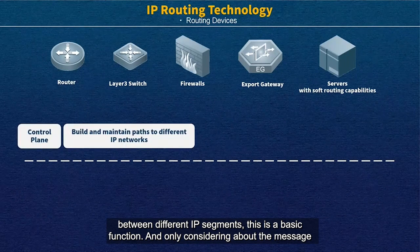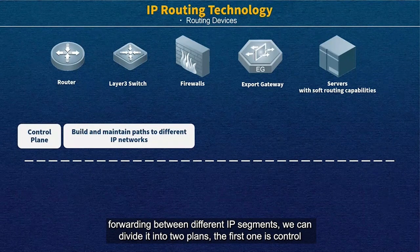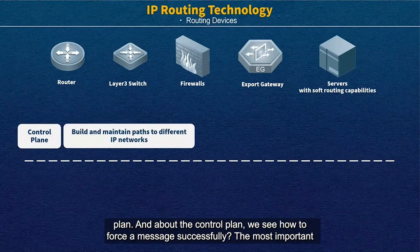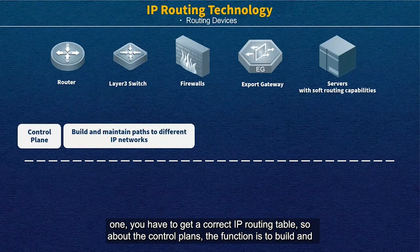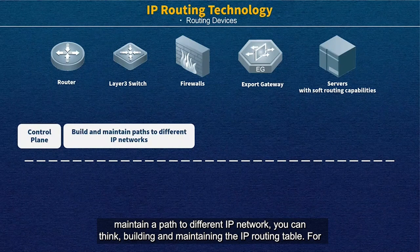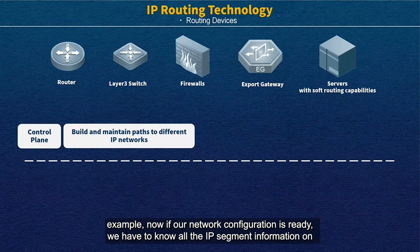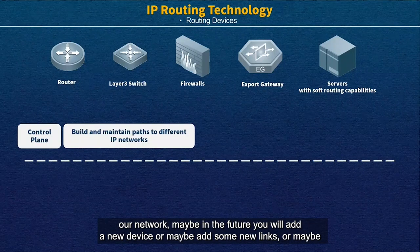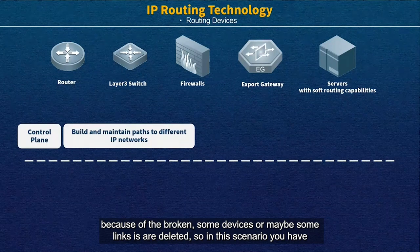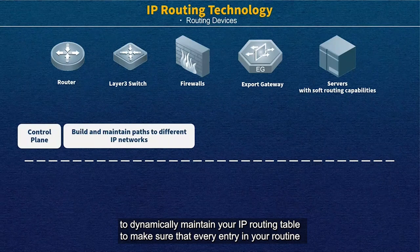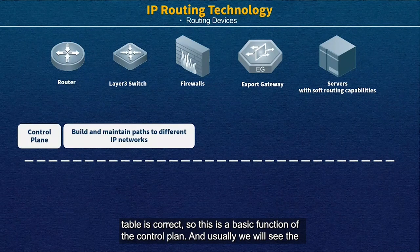Considering only message forwarding between different IP segments, we can divide it into two planes. The first one is the control plane. About the control plane, we look at how to forward messages successfully. The most important thing is you have to get a correct IP routing table. So the function of the control plane is to build and maintain the path to different IP networks — you can think of it as building and maintaining the IP routing table. If our network configuration is ready, we have to know all the IP segment information. In the future, you might add new devices or links, or some devices or links may be deleted due to failure. So you have to dynamically maintain your IP routing table to make sure that every entry is correct.